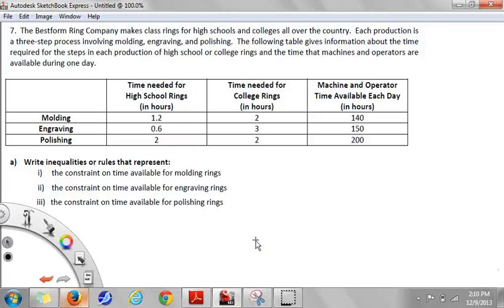Practice Test 4, Problem 7. The Best Forum Ring Company makes class rings for high schools and colleges all over the country. Each production is a three-step process involving molding, engraving, and polishing. The following table gives information about the time required for the steps in each production of high school or college rings, and the time that machines and operators are available during one day.